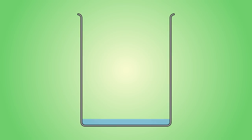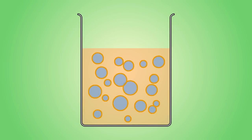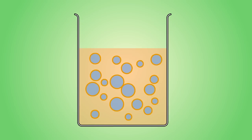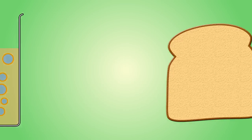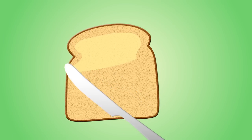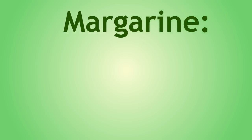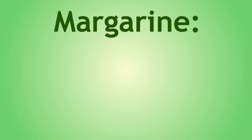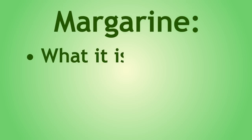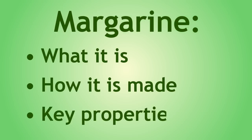We have previously learned that an emulsion is a mixture of two immiscible liquids stabilized using an emulsifier. Margarine is a very good example of an emulsion. In this lesson, we will learn about margarine: what it is, how it is made, and a few key properties.